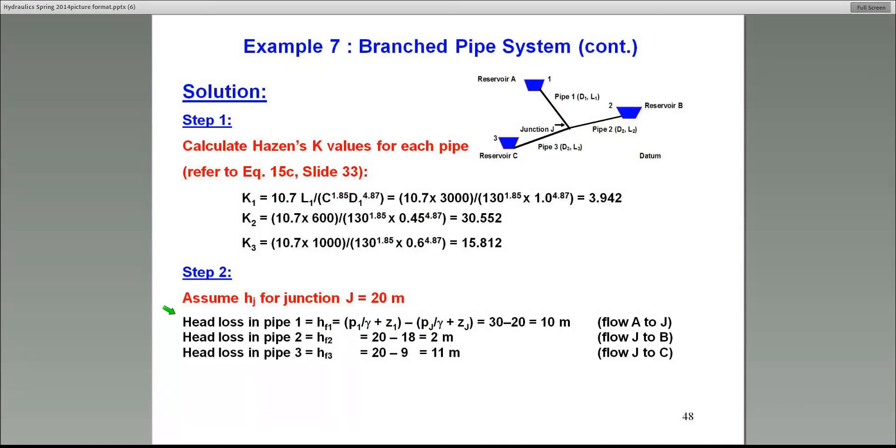Let's see if that's true and how much we're off by assuming this particular hydraulic junction head. For example, in pipe number 1, the head loss will obviously be, if you apply the Bernoulli equation between 1 and the junction J, neglecting the velocity head, that's P1 over gamma plus Z1 minus Pj over gamma plus Zj will give you 10 meters head loss. That's expected because the total head at A is 30, the total head at junction J, the assumed one, is 20. The difference is 10, and that has got to be equal to the head loss. So that's how you apply the Bernoulli equation to get that head loss.